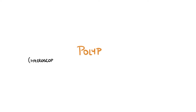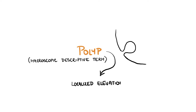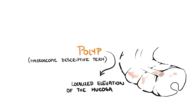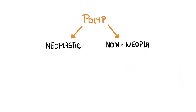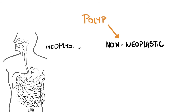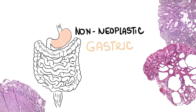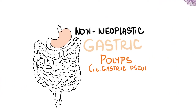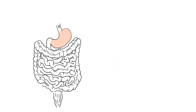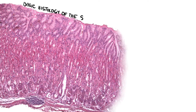The term polyp is a macroscopic descriptive term referring to a localized elevation of the mucosa into the lumen of the organ. It can be classified as neoplastic or non-neoplastic. In this video, we will focus solely on non-neoplastic gastric polyps. Before we start, we should briefly discuss the basic histology of the stomach mucosa.